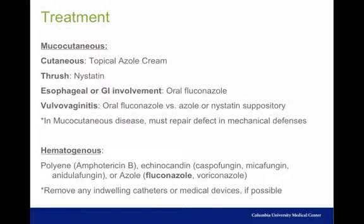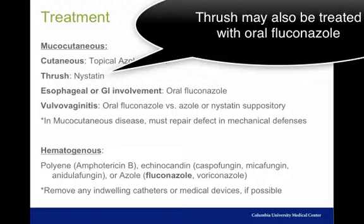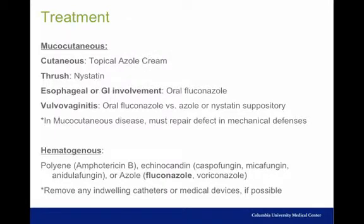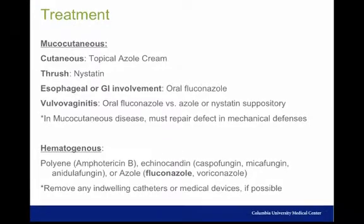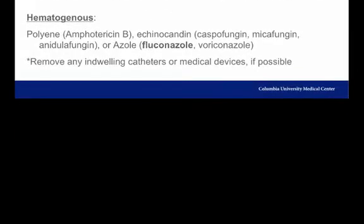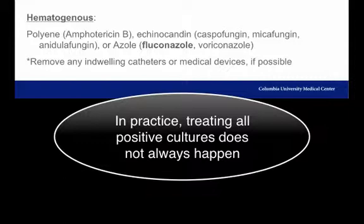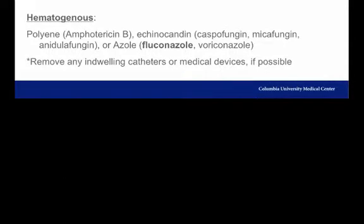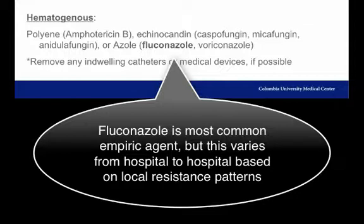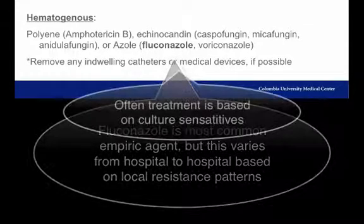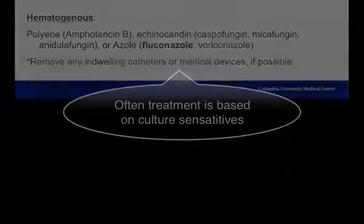Cutaneous infections are treated with a topical azole. Oral thrush is treated with nystatin, a low-dose polyene swished and gargled in the mouth then swallowed. Esophageal or other GI involvement requires systemic treatment, usually with oral fluconazole. Vulvovaginitis is treated with either oral fluconazole or a vaginal suppository. For hematogenous candidiasis, most sources recommend treating all patients with positive cultures with a systemic agent. Polyenes, echinocandins, and azoles are all used, with no class clearly superior. Fluconazole is the most common empiric agent, but fungal culture sensitivities must be carefully reviewed.